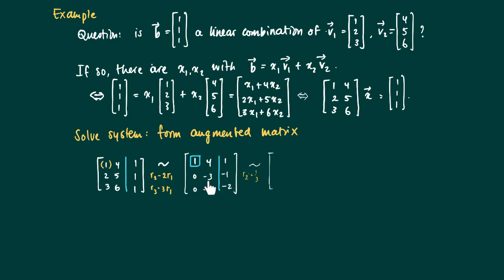Well the second row we multiply with minus one third. Then we'll create a pivot over here. So we get [1,4,1; 0,1,1/3].